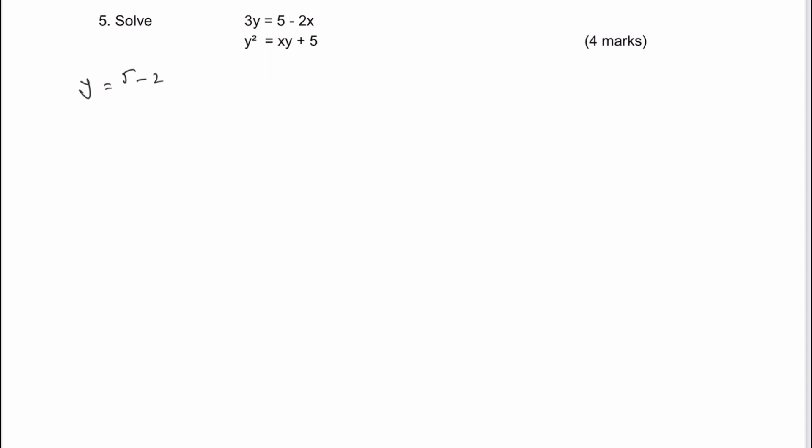We're going to use the process of substitution in order to solve this particular equation, because we've got a value of y squared in the second one, which is effectively a quadratic equation. So if I look at the first equation, I can rewrite that as y equals five minus two x, all divided by three.